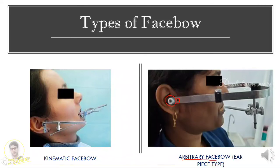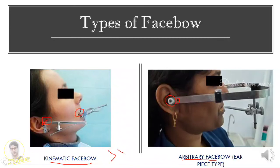Coming to the kinematic facebow, in the kinematic facebow we have something called a mandibular clutch. The mandibular clutch goes and engages the mandibular occlusal rim, and here we have styli that sit on top of a graph paper. We ask the patient to open around 10 to 12 millimeters, within which the condyles are in pure rotational movement. The styli record the pure rotational movement — the terminal hinge axis movement of the condyles — and thus it is called the kinematic facebow. Kinematic facebow is more accurate but more cumbersome and difficult to obtain than an arbitrary facebow.